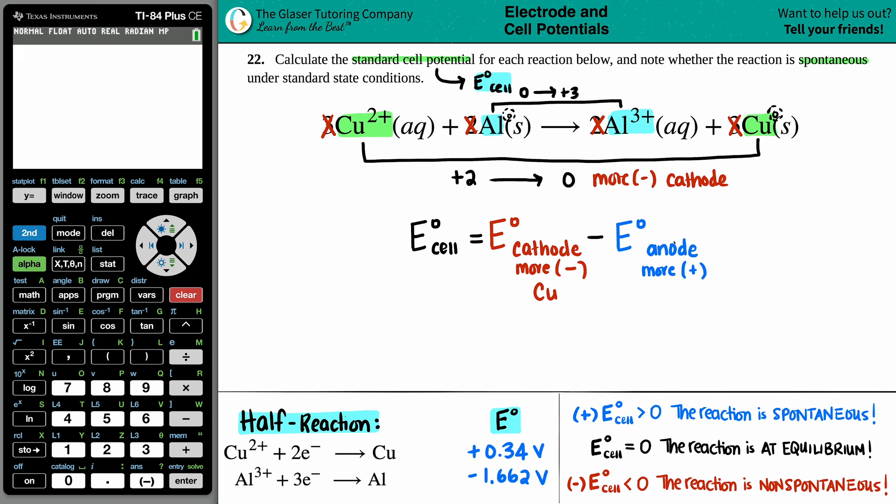So I know that the Cu is going to be at the cathode value. That should mean that the anode is aluminum, but let's just make sure. We said that it was 0 to a plus 3. That's more positive. And that's at the anode. So it checks out.